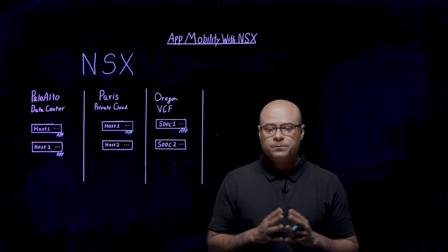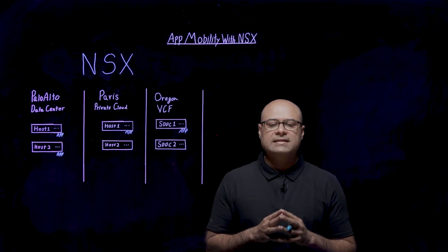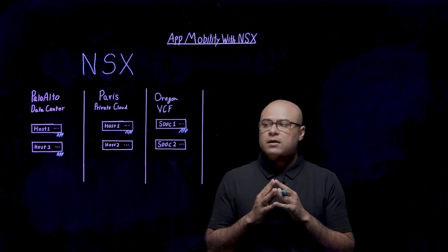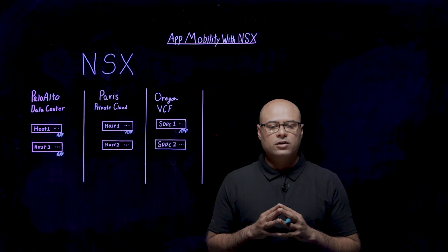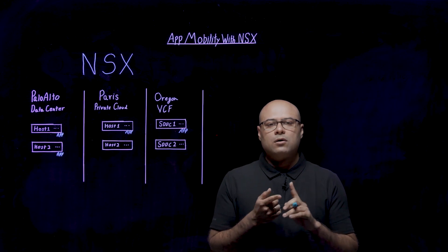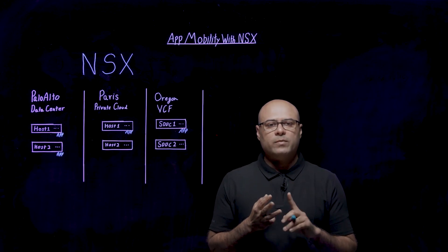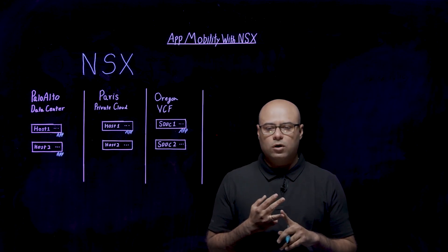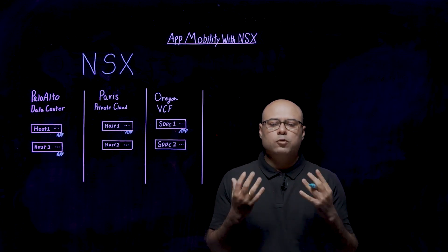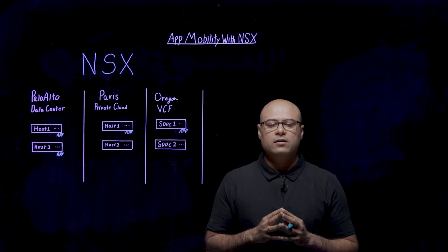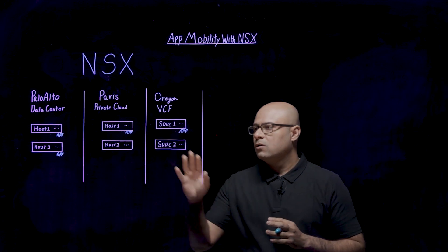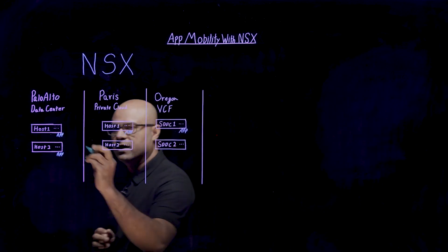So how does it work? All NSX networking and security constructs — router, load balancer, firewalls — deploy as distributed software directly on the hypervisor.